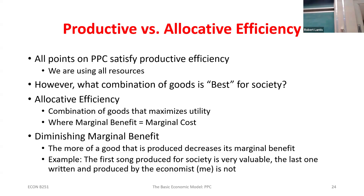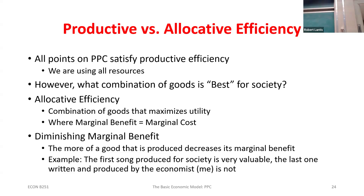Why does the allocatively efficient point have to be on the curve? It couldn't be interior because even if marginal benefit equals marginal cost at that point, I'm not using all my resources — so if I used all my resources I could get even more benefit for society. We know the allocatively efficient point will always be a production efficient point. And we can't choose a point outside the curve because I don't have enough resources.